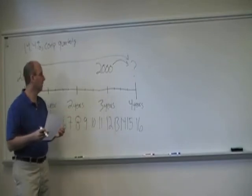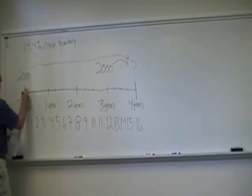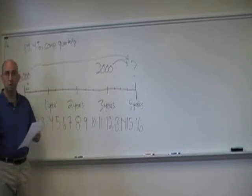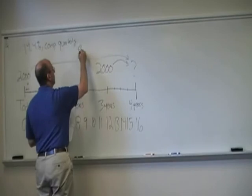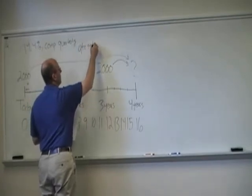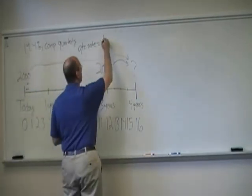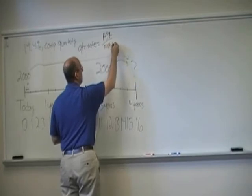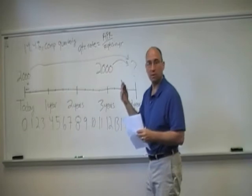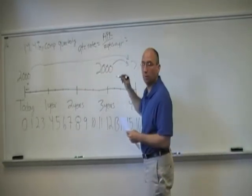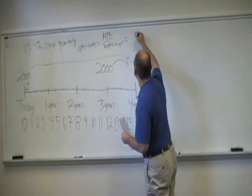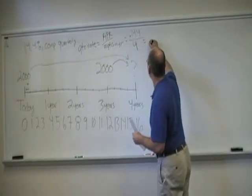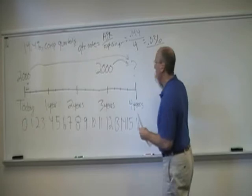If they represent a quarter, then what is the appropriate rate for each quarter? Well, if it's 14.4% per year, and there's four quarters per year, then the quarterly rate is simply equal to the APR over the number of quarters in a year, which we're given the APR as that annual rate. 14.4%, four quarters in a year, 3.6%.